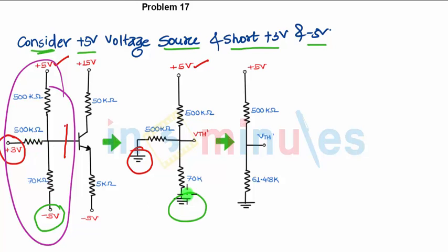How can you do this? Assume a point A over here and B over here. Similarly, B over here. Between A and B, you will have one resistance which is the parallel combination of 500k and 70k—that will give you 61.403 kilohms.